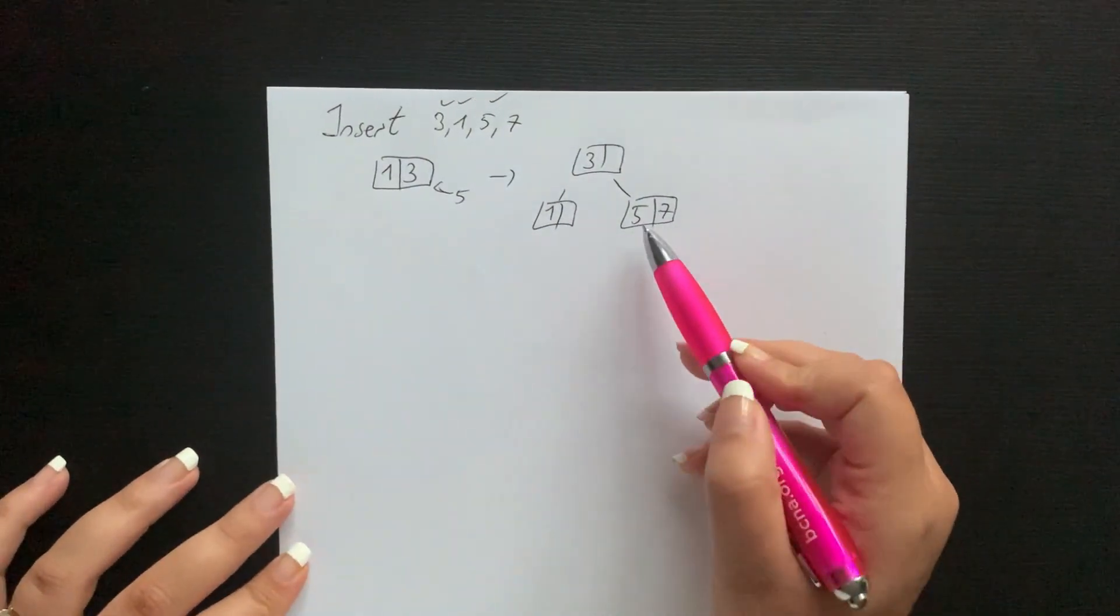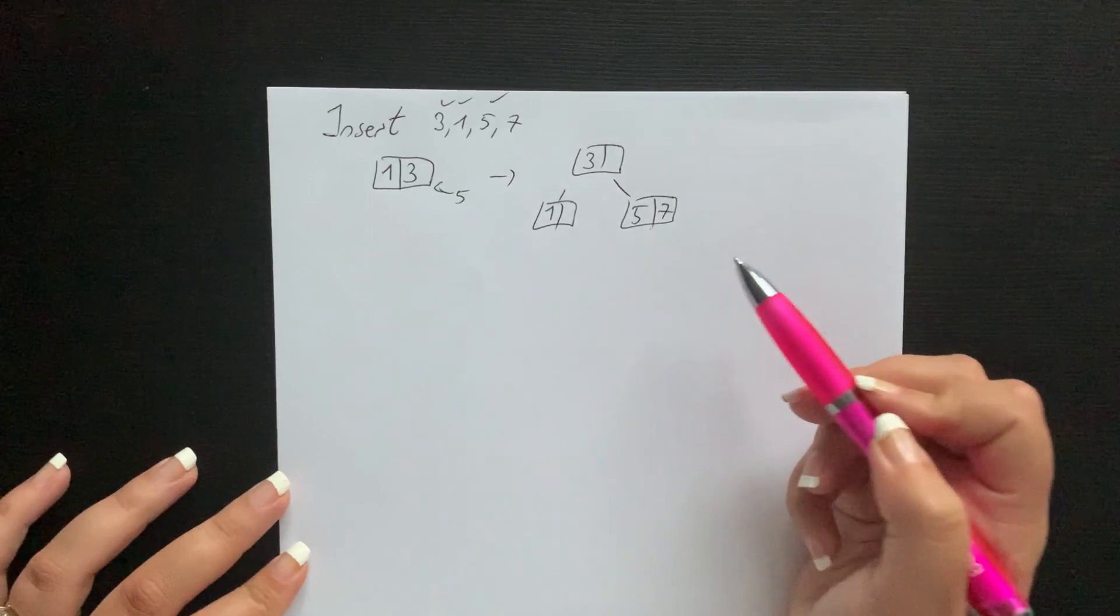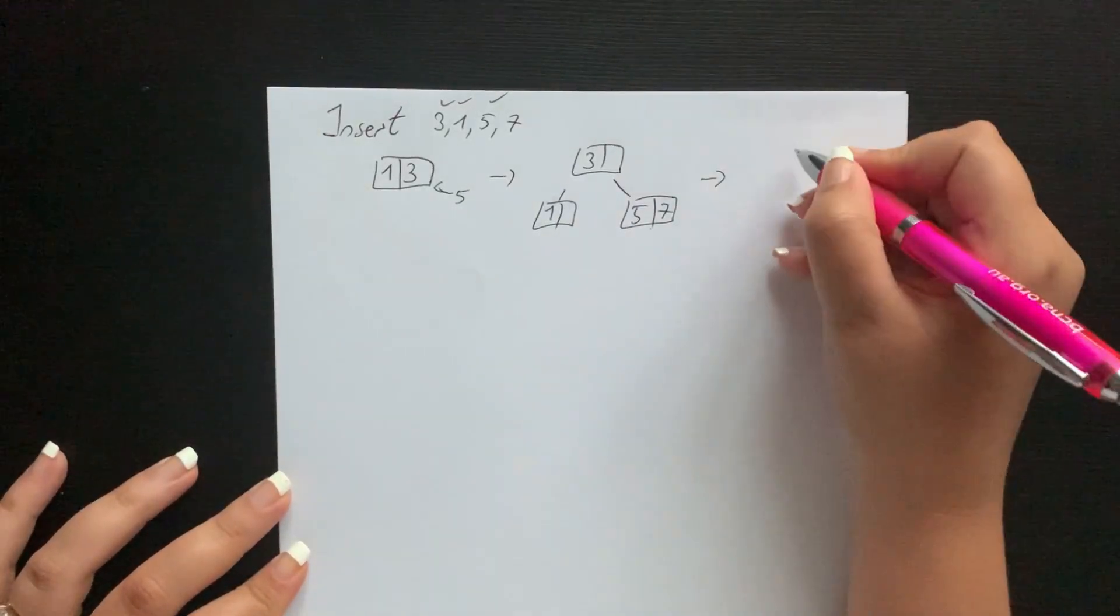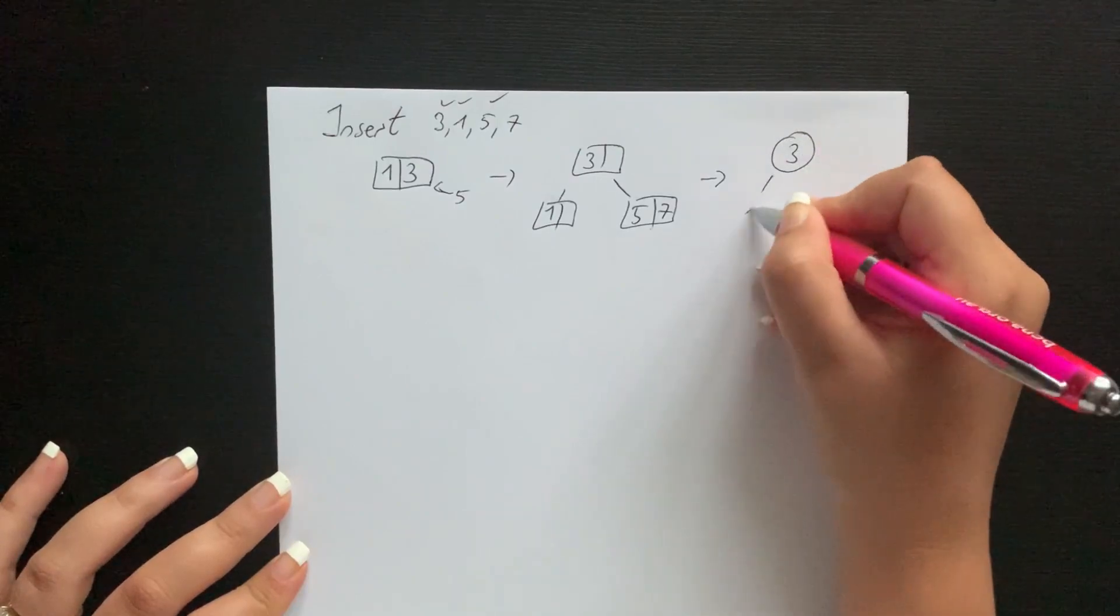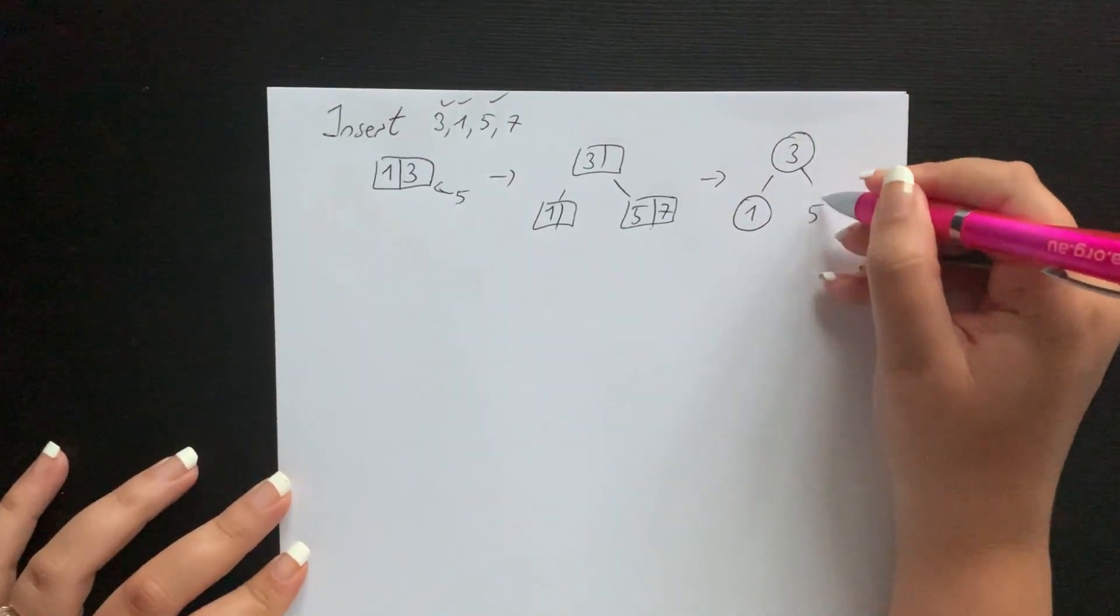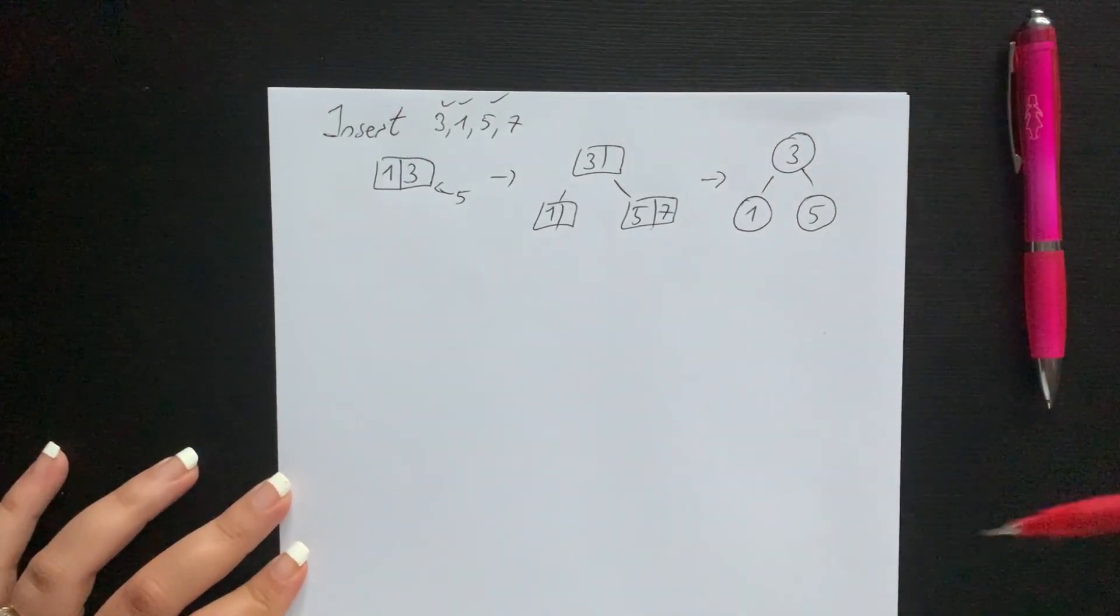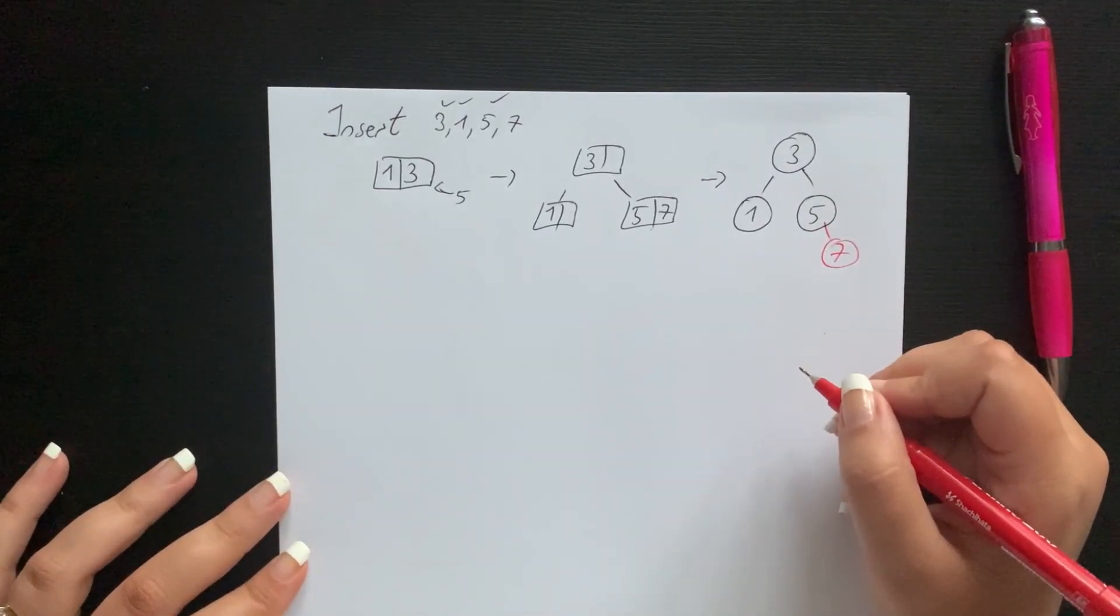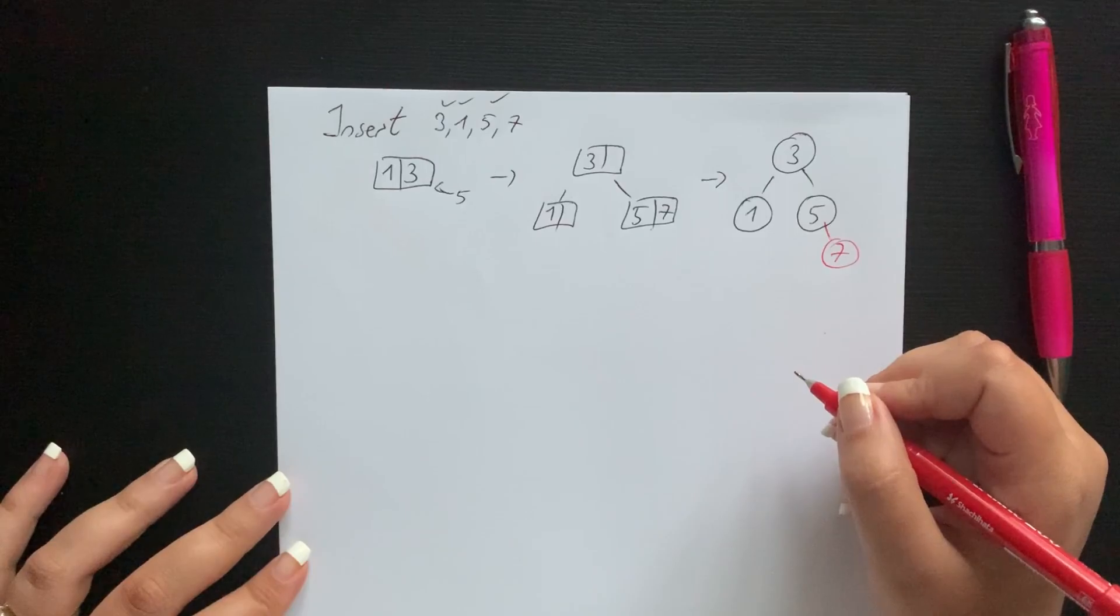Okay what we're gonna do now, the trick is that this two-node is gonna be transformed into a red link. So the tree would look like this: it would be three, one, then we have five and seven. And it is exactly the same as we would follow the rules of a red black tree.